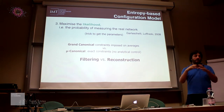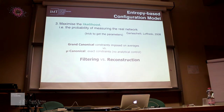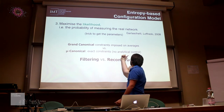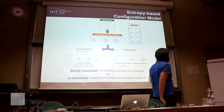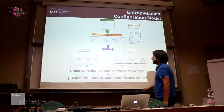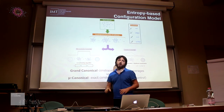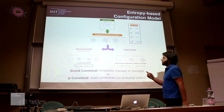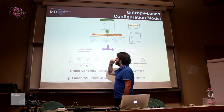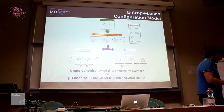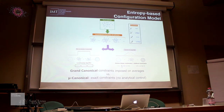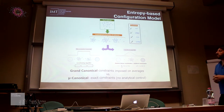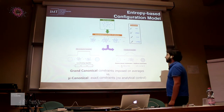In the grand-canonical approach, constraints are imposed on average on the ensemble, as opposed to the micro-canonical approach, in which you have exact constraints but no analytical control. The micro-canonical approach is really hard — it's something like a rewiring where all possible different networks with the given degree sequence are considered. But you get lots of problems: it is algorithmic, you have to prove the ergodicity of the algorithm, which is not given and really hard to prove. While in the grand-canonical ensemble, this is already inside the definition of the whole framework.